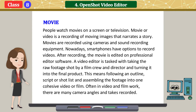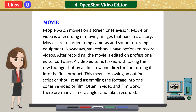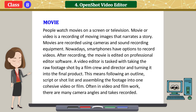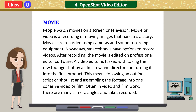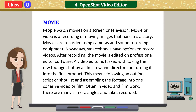People watch movies on a screen or television. A movie or video is a recording of moving images that narrates a story. Movies are recorded using cameras and sound recording equipment. Nowadays smartphones have options to record videos. After recording, the movie is edited on professional editor software. A video editor is tasked with taking the raw footage shot by a film crew and director and turning it into the final product.